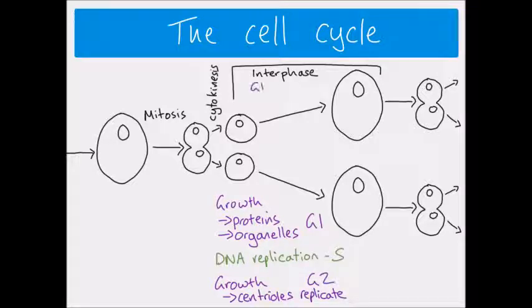So interphase is made of G1, S and G2 and then again we could say if we're labelling this whole diagram then over here because this is also interphase until we end up with our full cell, we've got G1, S and G2 there as well. Okay so that's interphase and then we have to look at the details of what's going on here in mitosis.